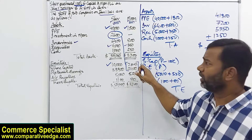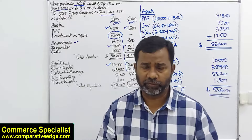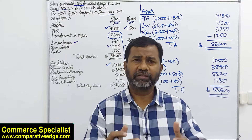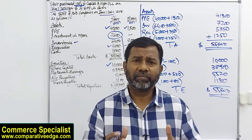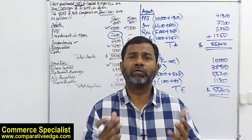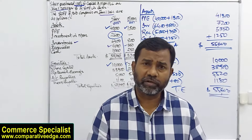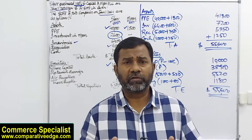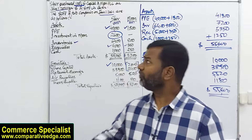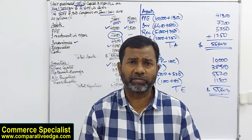Now I am taking you to the next example which is a little more advanced. In the second example we will talk about how to calculate goodwill, what group reserves are and how to calculate them, what non-controlling interest is and how to calculate it, and what happens if the percentage of acquisition is not 100 percent but a different percentage.